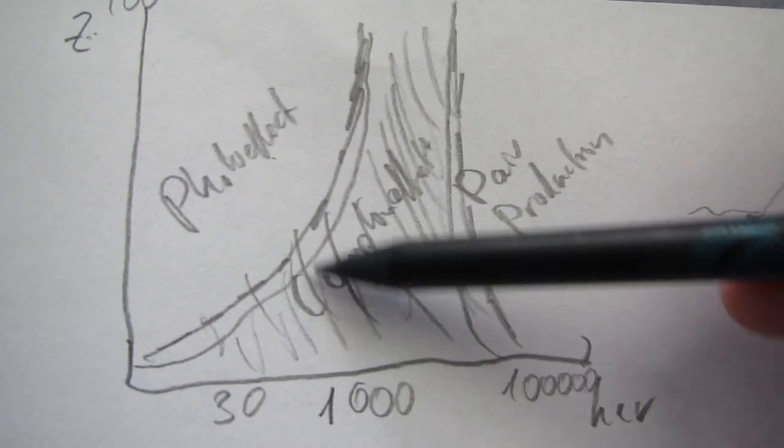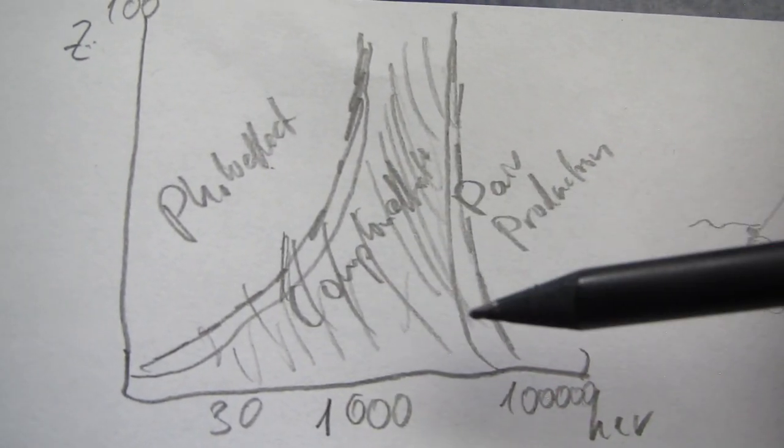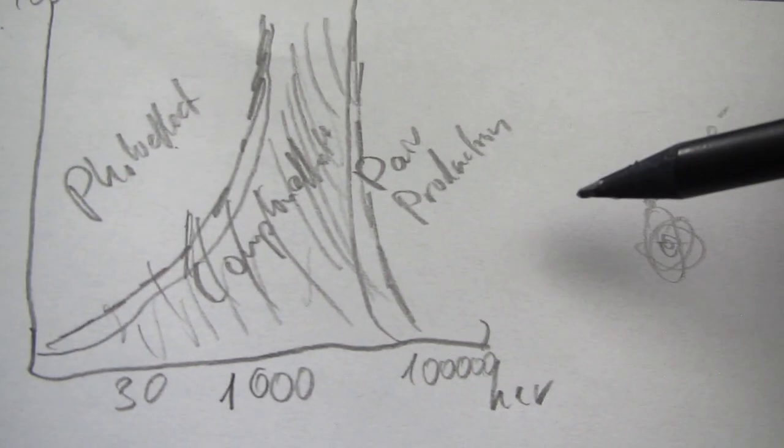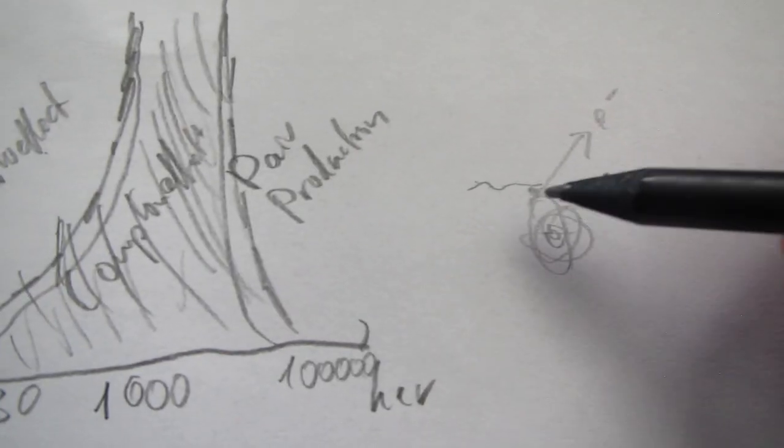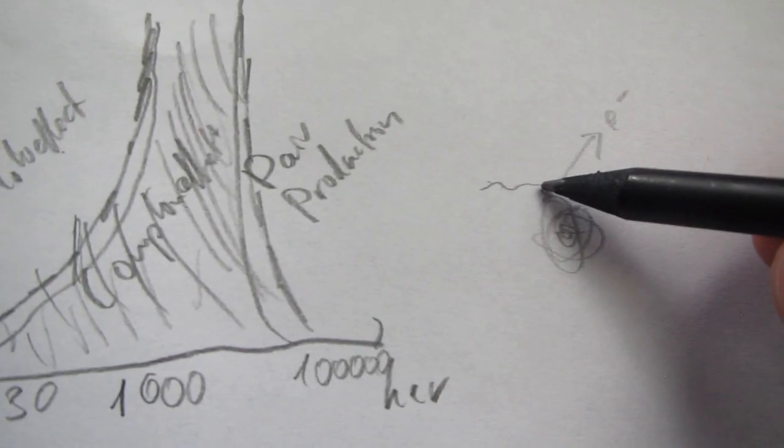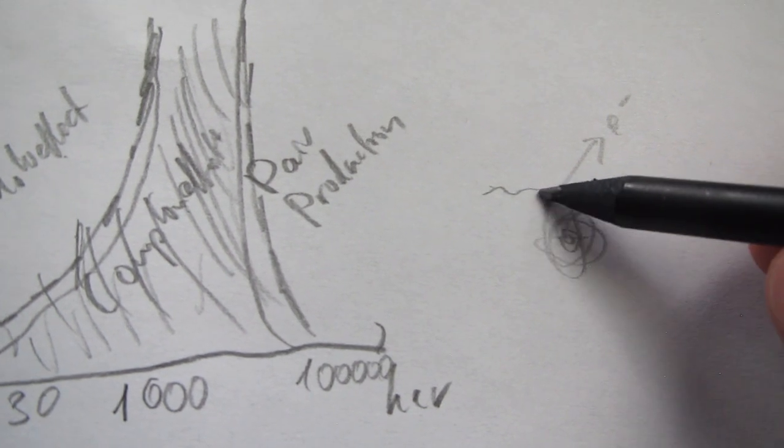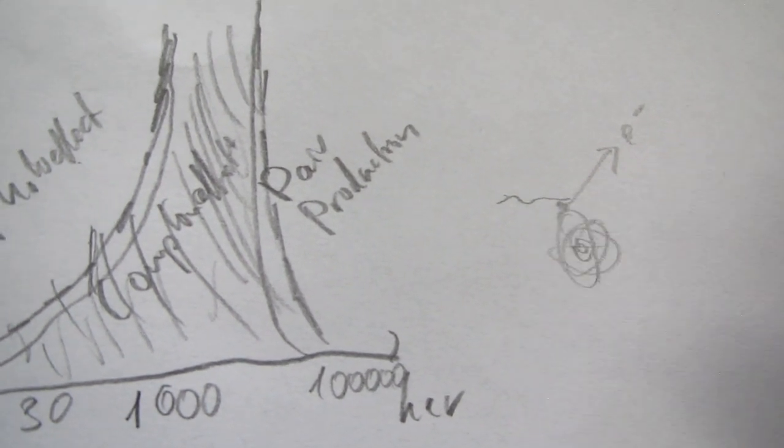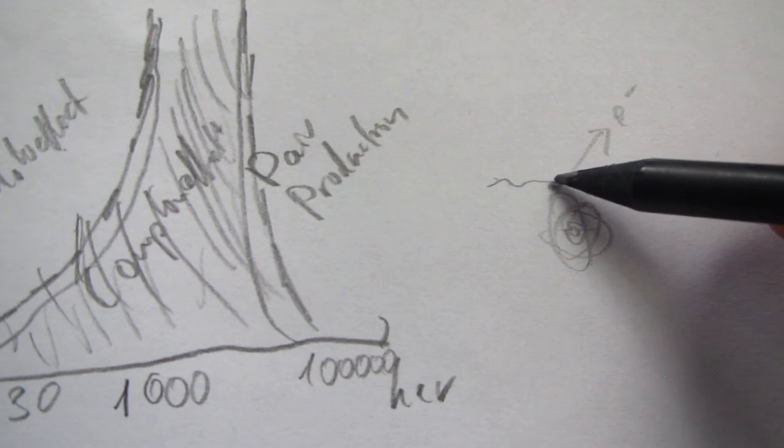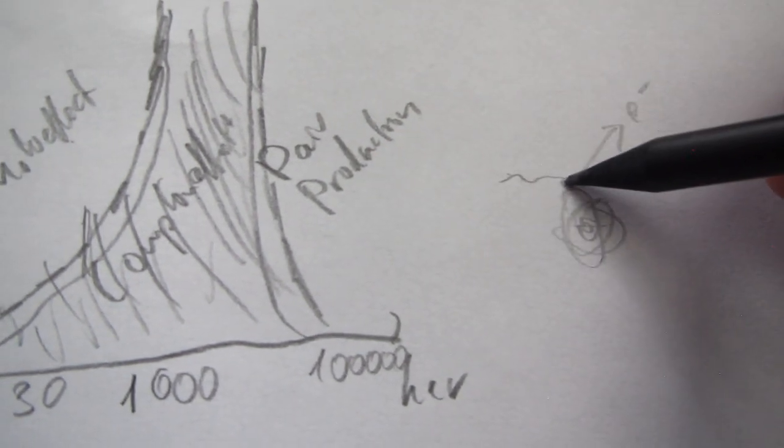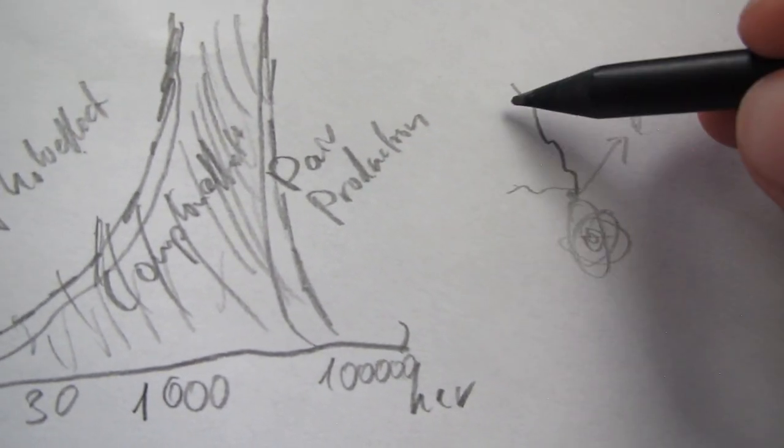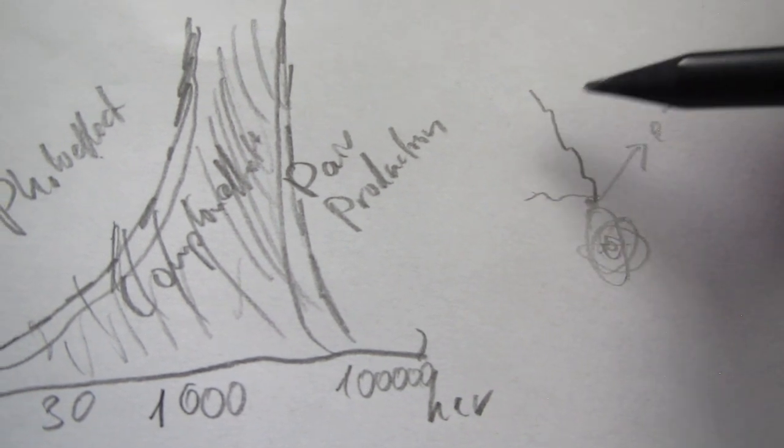From even higher energies on, the dominating effect will be the Compton effect, where the electron gets ionized as well. But the photon does not give off its entire energy to the electron. But instead, the photon lives on and gets diffracted into a different direction like this. And it can ionize another atom again.